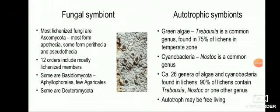For autotrophic symbionts, the green alga Trebouxia is a common genus found in 75% of Lichens in the temperate zone. The cyanobacterium Nostoc is a common genus in mutual relationship with the fungus — Nostoc is a nitrogen-fixing cyanobacterium. 26 genera of algae and cyanobacteria are found in Lichens; 90% of Lichens contain Trebouxia, Nostoc, or one other genus.